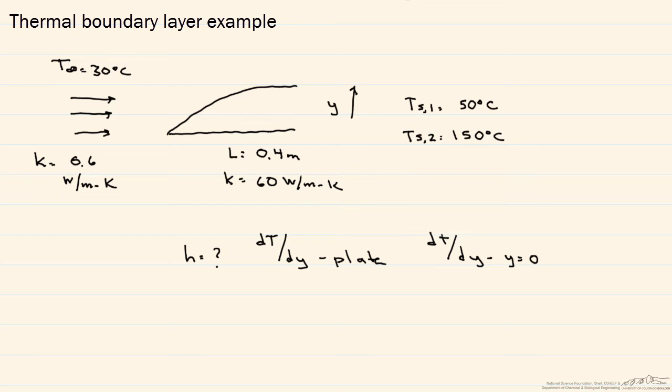As soon as it hits the plate, a boundary layer is going to form. In this case, we'll get a thermal boundary layer because the temperature of the surface, which we'll call TS1, the surface that the fluid flows over, is equal to 50 degrees C.